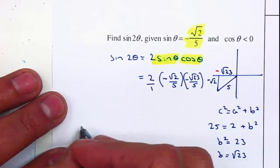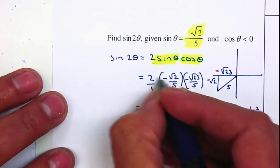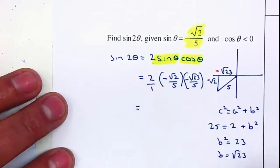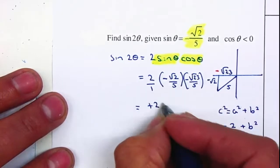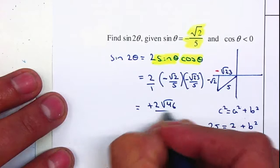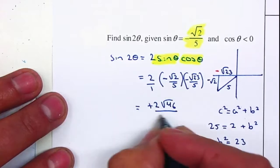I'm going to place this over 1 and multiply across. So 2 times the negative, times the negative will be positive 2. 2 times square root of 2 times square root of 23 is square root of 46, over 1 times 5 times 5 is 25.